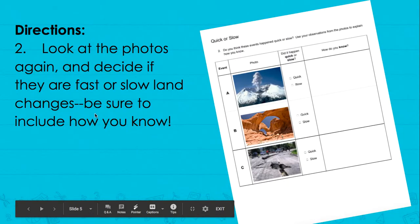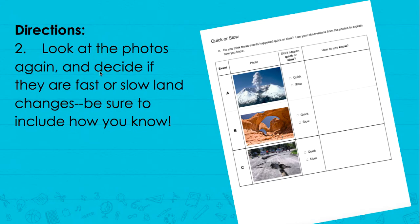Step two: look at the photos again. This is going to be a separate page. Decide if they are fast or slow land changes and be sure to write how you know.